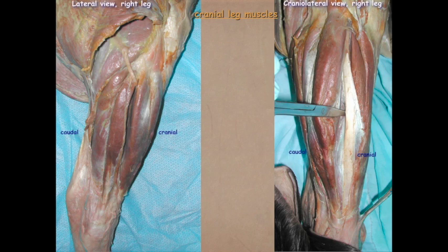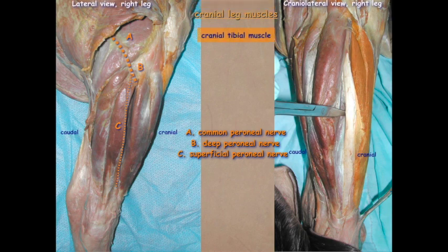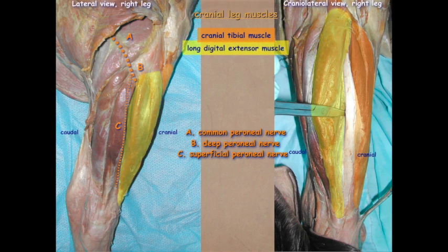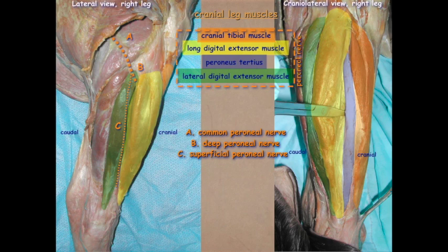Let's have a closer look at these muscles. Here once again is our common peroneal nerve with the deep peroneal nerve and the superficial peroneal nerve, which may have been removed with the skin. This is our cranial tibial muscle — most of it is sitting flat up against the cranial lateral surface of the tibia. On the right, we have a reflection of the long digital extensor so we can see more of that cranial tibial. The peroneus tertius lies between the long digital extensor and the cranial tibial muscle. Here we have the lateral digital extensor — these are all innervated by the peroneal nerve, important in flexing of the hock and extending the digit.